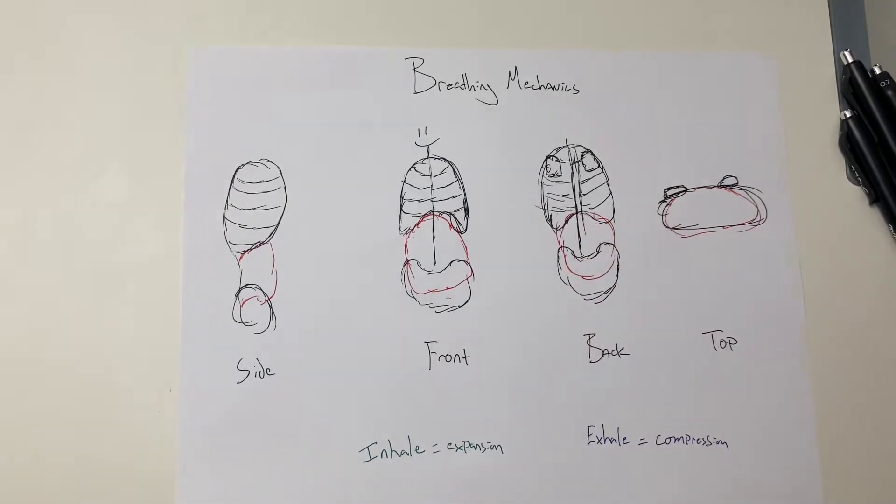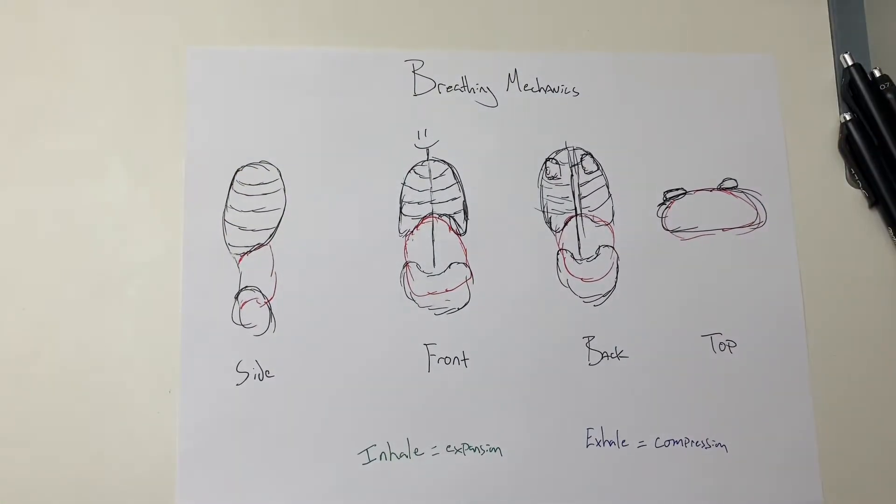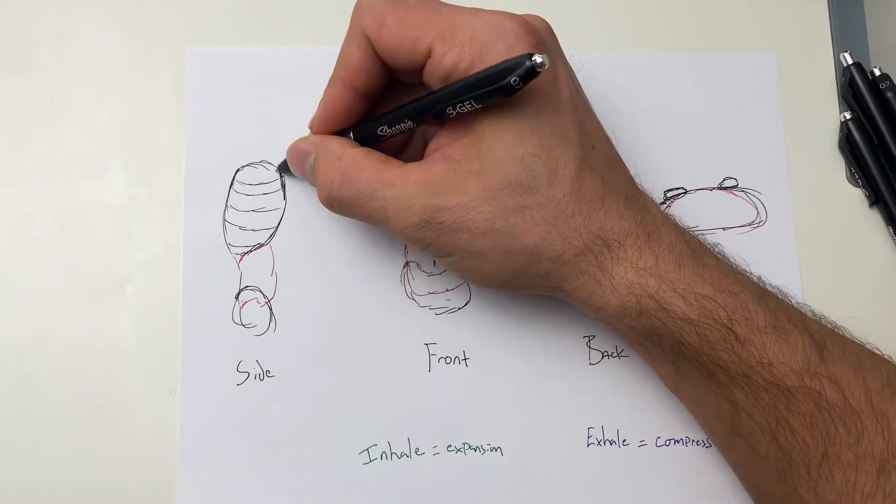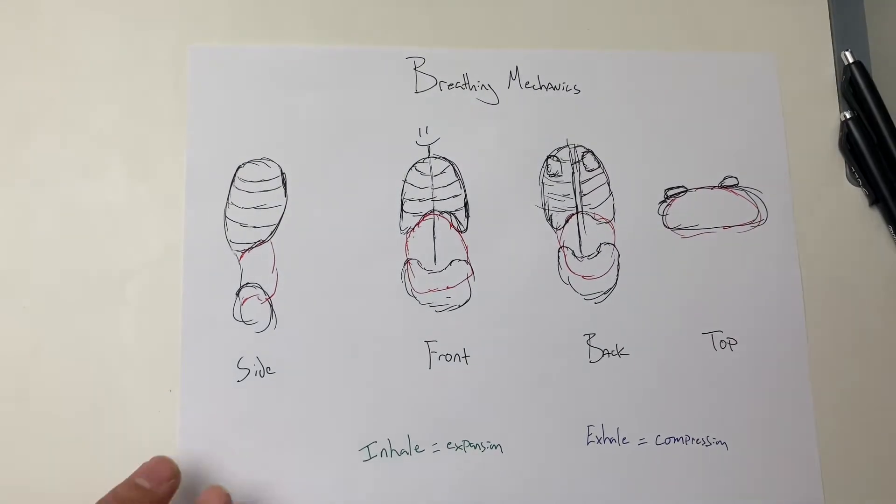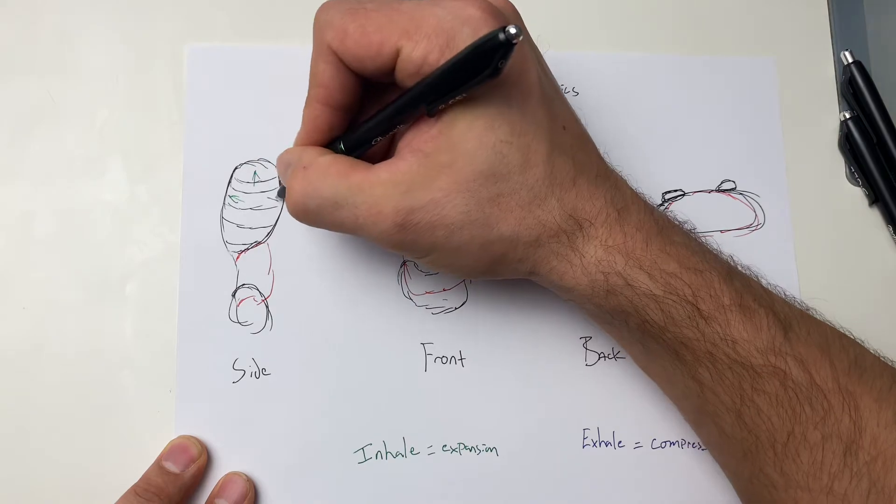So remember that when we inhale, things expand, and when we exhale, things compress. So what's going on with the ribcage is, if the sternum's here, and when we inhale, things should go out 360 degrees.